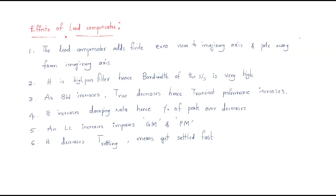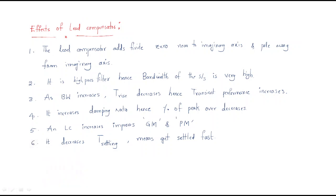Now we will understand what are the effects of using the lead compensator — what changes we get. The first change is: the lead compensator adds a finite zero near to the imaginary axis, and the pole is pulled away from the imaginary axis. The zero will be near to the imaginary axis; the pole will be away from the imaginary axis.